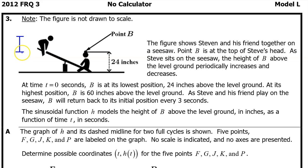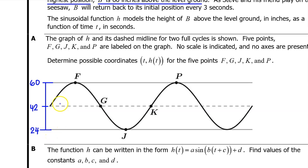Let's start by building a vertical scale that will reflect the key output values. Point B has a low of 24, so let's put a 24 at the lowest mark. B is 60 inches above the level ground at its highest position, so this mark will be 60. The midline will be the average of these two numbers, so let's add them up and divide by 2. We need to do 60 plus 24 divided by 2. This is 84 divided by 2, which is 42. So that's the midline. Applying that vertical scale to our graph gives us the output coordinate for all five points. Next we need to find the input coordinate for each point.